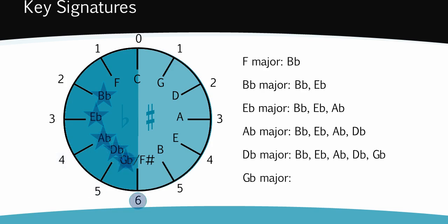What about G flat major? Which flats are in that key? B flat, E flat, A flat, D flat and G flat makes five flats. But what is the sixth one?